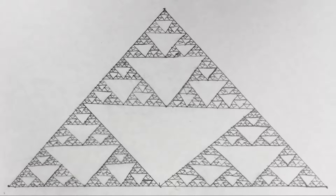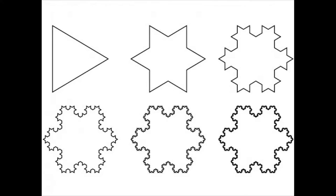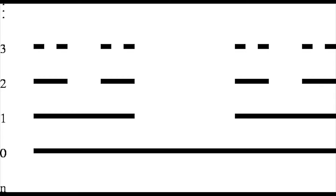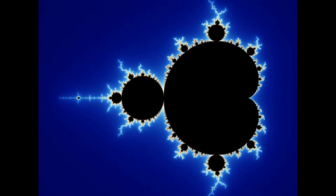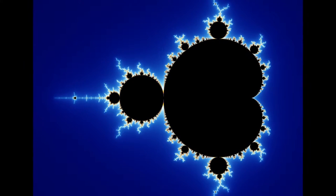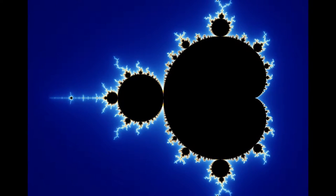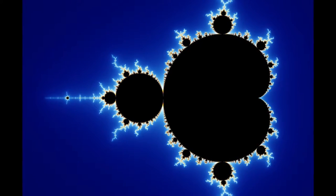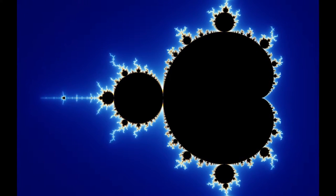Weierstrass' graph was one of many that became known as mathematical monsters, created during the late 1800s and early 1900s. They were called this because they became problems that the majority of mathematicians avoided. These monsters would eventually be named fractals in 1975 by Benoit Mandelbrot, after he discovered a new, significantly more complicated fractal known as the Mandelbrot set, while playing with graphing on the Gaussian plane.